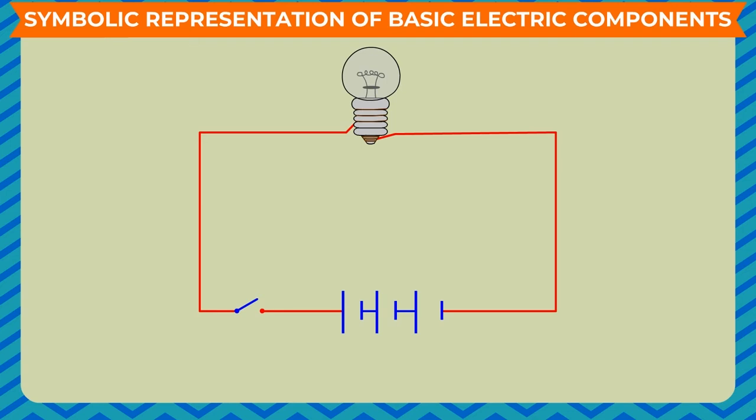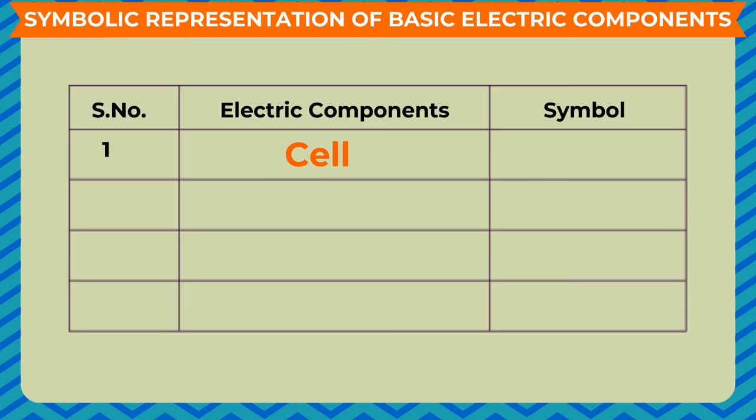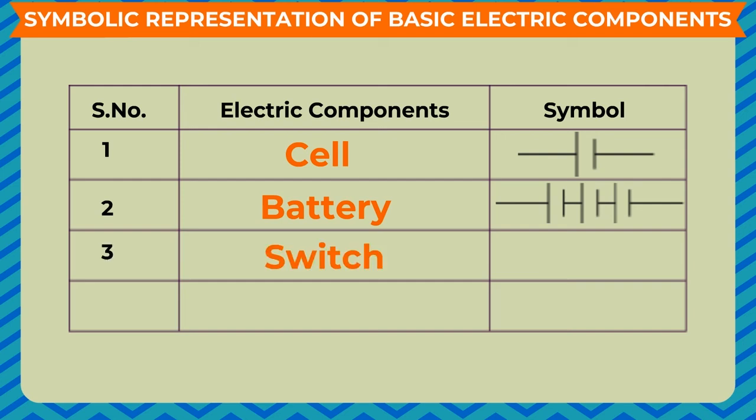Symbolic Representation of Basic Electric Components. In general, when we draw an electric circuit, we represent battery, electric switch, etc. by specific symbols. A cell is represented using the symbol. Battery is represented using the symbol. Switch is represented using the symbol. Bulb is represented using the symbol.